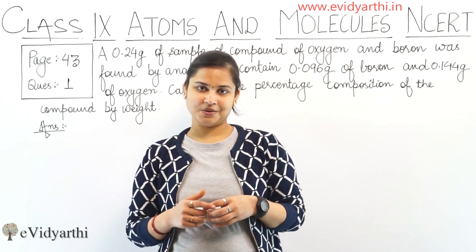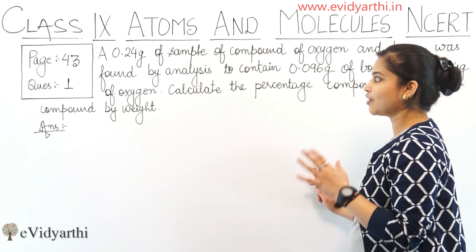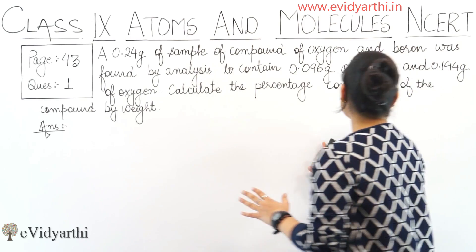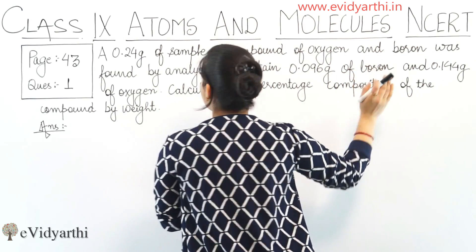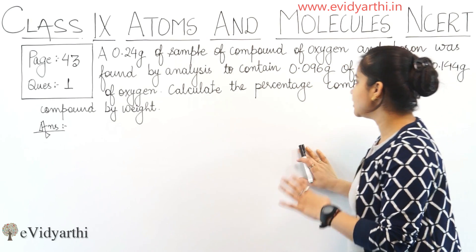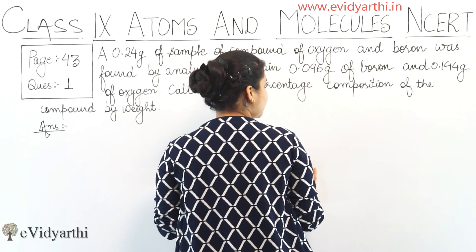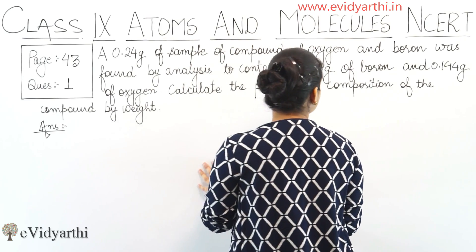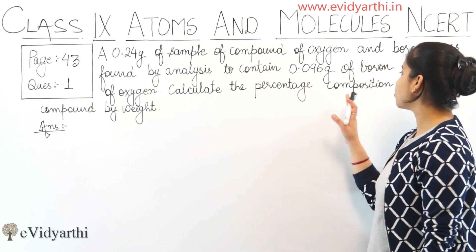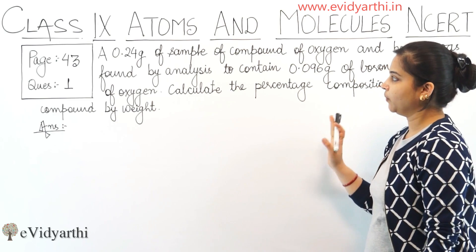So let's see what is the question. The question is: a 0.24 grams sample of compound of oxygen and boron was found by analysis to contain 0.096 grams of boron and 0.144 grams of oxygen. Calculate the percentage composition of the compound by weight.